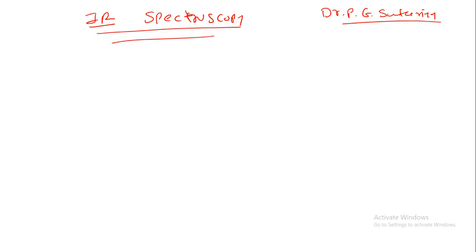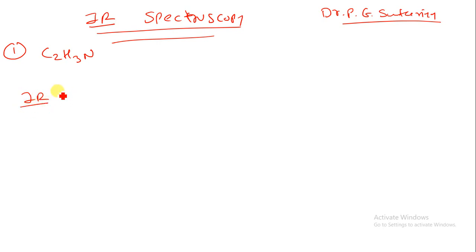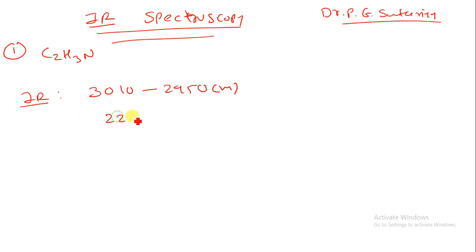Let us start with the first example. Suppose in an examination they will ask a question with molecular formula C2H3N, or they can give the IR spectra like this: 3010 cm⁻¹ up to 2950 cm⁻¹ medium peak, second one 2255 medium peak, and 1370 cm⁻¹.